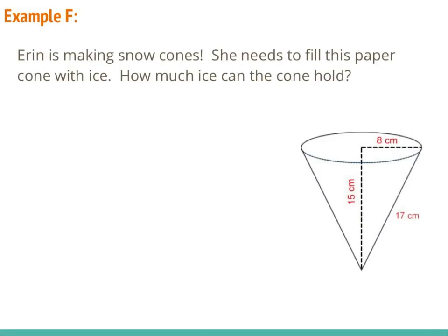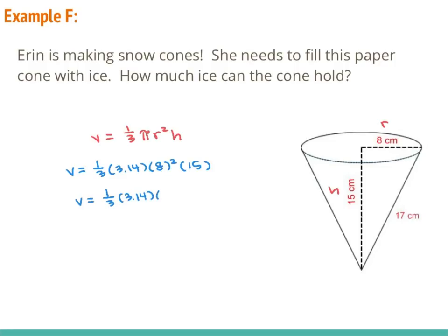Our final example says that Erin is making snow cones and she needs to fill this paper cone with ice. How much ice can the cone hold? So the volume formula for a cone is 1/3 times π r² times height. Our radius is 8 centimeters and our height is 15. So we substitute: 1/3 times 3.14 times 8 squared times 15. We need to square before we multiply, so 8 squared is 64. Now we multiply, and we get volume is equal to 1,004.8 centimeters cubed.